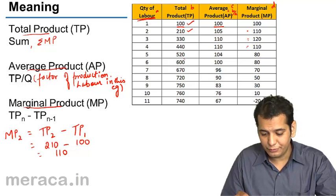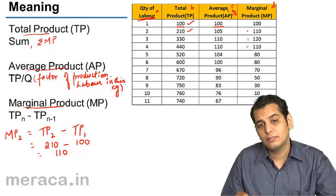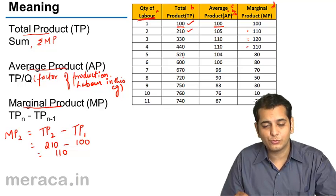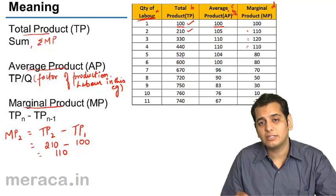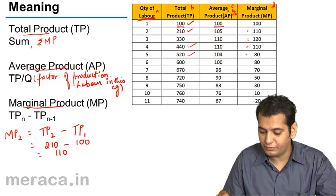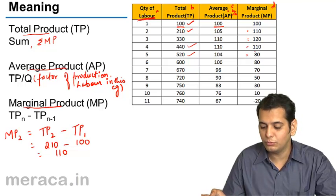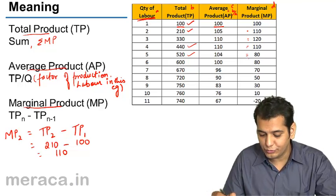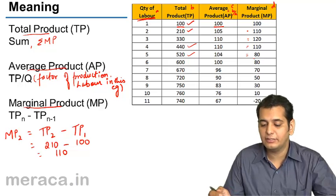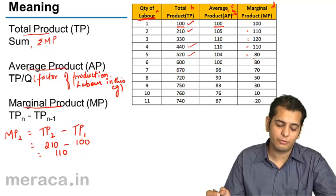At the fifth level, when the fifth labor is employed, Total Product rises to 520. The Marginal Product is 520 minus 440, which equals 80. In this way we calculate the Average Product and the Marginal Product.